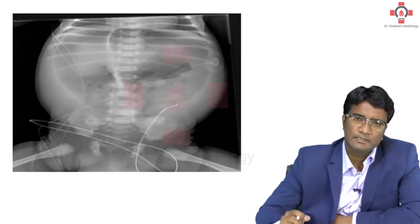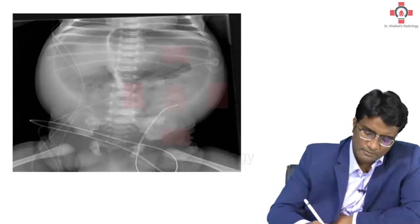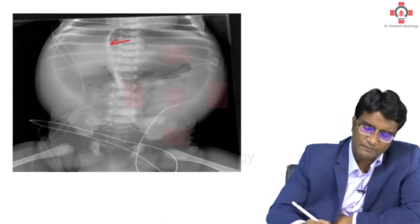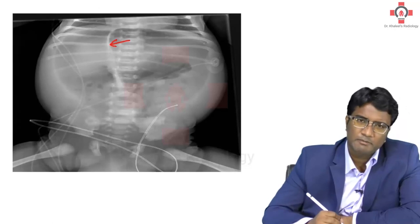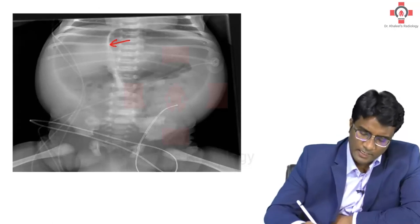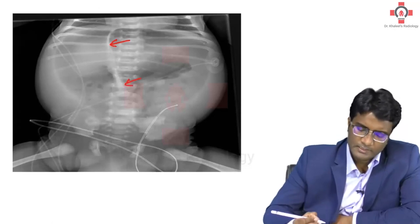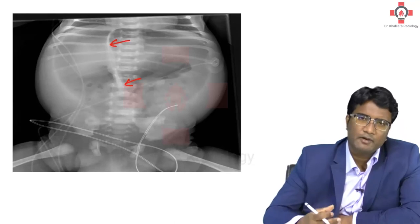Please look at this image. In this image, you can see the prominence of the falciform ligament of the liver and also the ligamentum teres standing out, because of the air on either side of these ligaments.